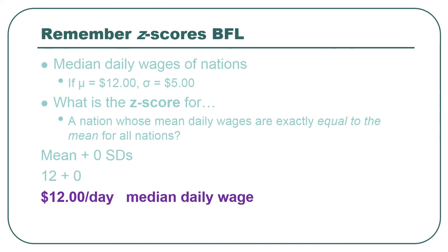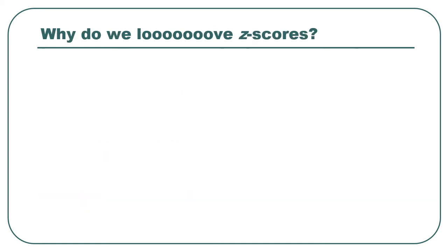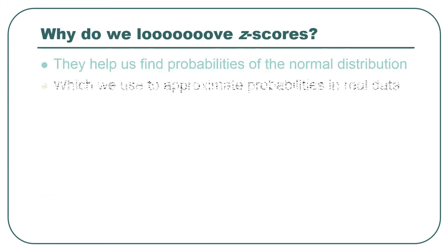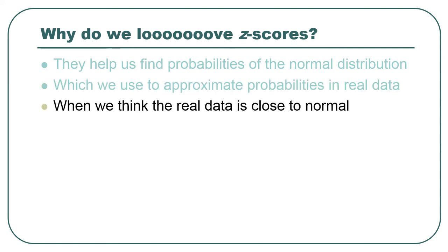So if you're at the mean, then your raw score value is the mean. Of course, because we just said that. And your z-score value is zero. But remembering that, why do we love z-scores? Because they help us find probabilities in the normal distribution. And then we will use those probabilities to approximate the probabilities in real data in situations where that makes sense for us to do. So when we think the real data is pretty close to normal, then we can do that kind of thing. And we're all done.